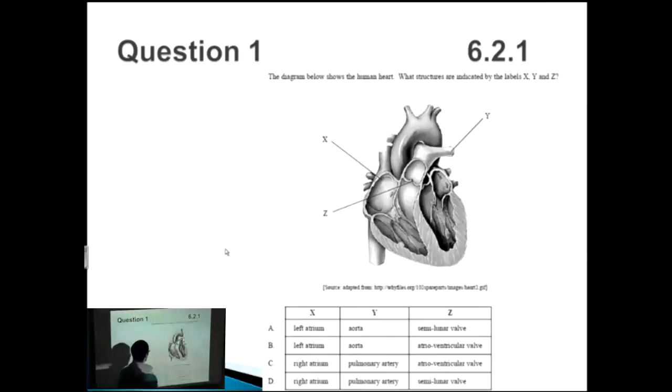Let's look at the first question which shows this diagram of a human heart at the bottom. What structures are labeled by the labels X, Y, and Z over here? The very first thing that you need to know is that every time you look at a heart diagram, right is actually on the left and the left is actually on the right.